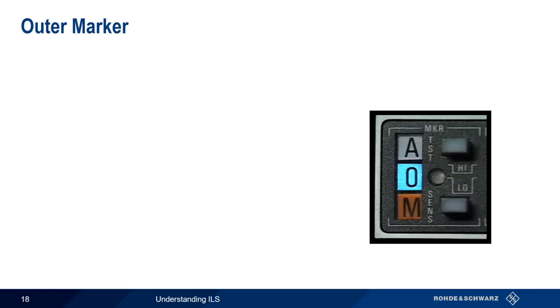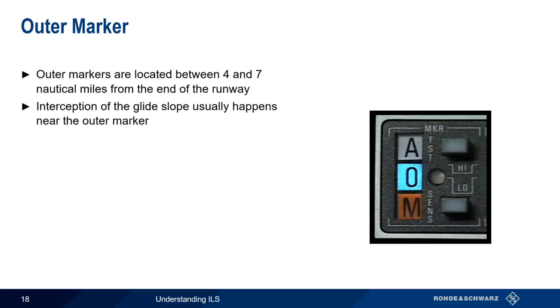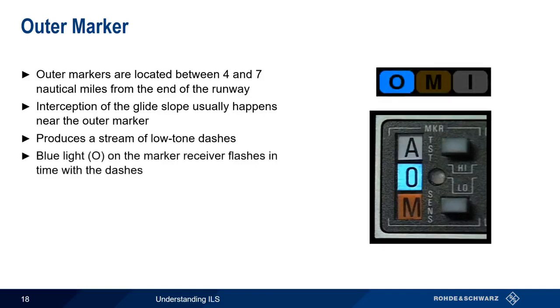Let's take a closer look at the three marker types, starting with the outer marker. As mentioned a moment ago, the outer marker is located from 4-7 nautical miles from the runway threshold, and the glide slope is usually intercepted near the outer marker. When flying over the outer marker, a stream of low-frequency dashes will be heard. Blue is used to represent the outer marker, and the blue light on the marker receiver in the aircraft flashes in time with the dashes.